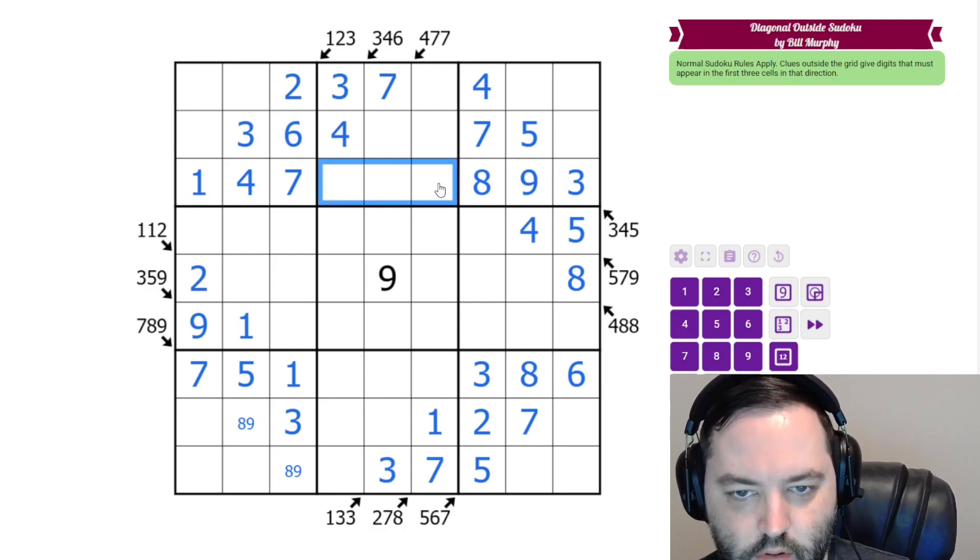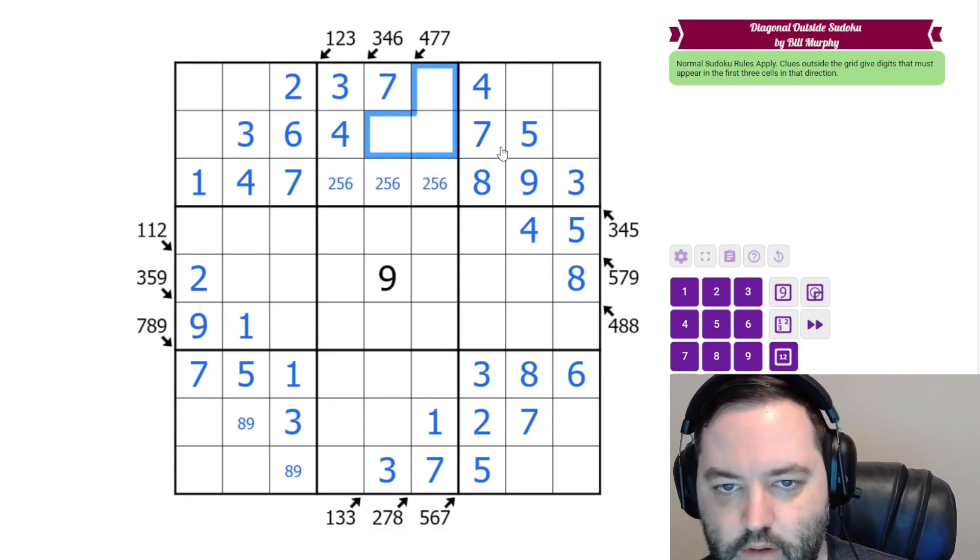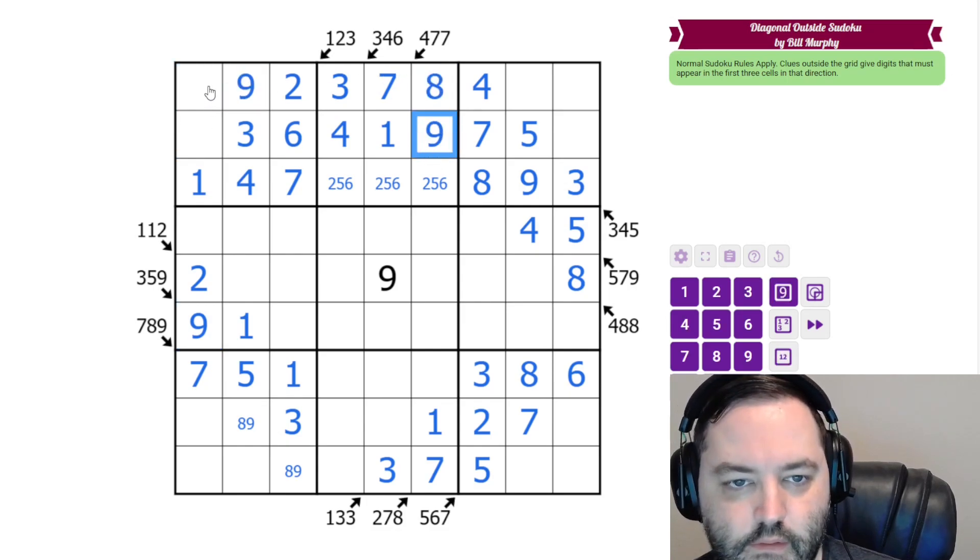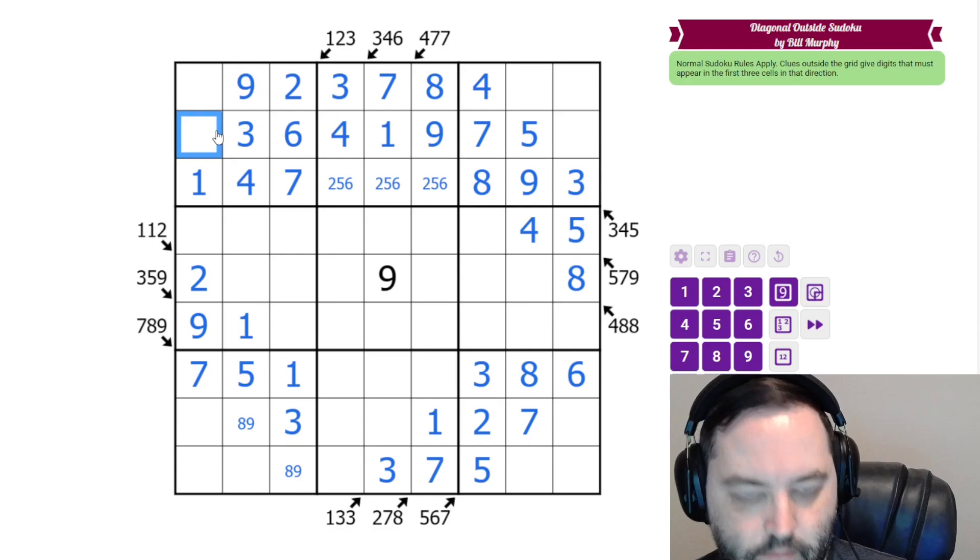So let's look across here. These are 2, 5, and 6. And then in the box, we need 1, 8, and 9. But the 1 can't go in these cells, so this is 1. These are 5, 8, and 9. And there's a 9 here. So this is 9, this is 8, this is 9.